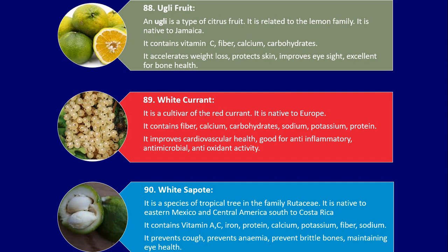Number 89. White Currant. It is a cultivar of the red currant. It is native to Europe. It contains fiber, calcium, carbohydrates, sodium, potassium and protein. It improves cardiovascular health and is good for anti-inflammatory, antimicrobial, and antioxidant activity.